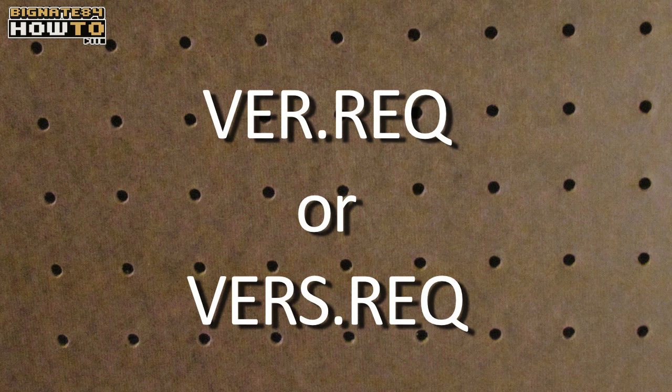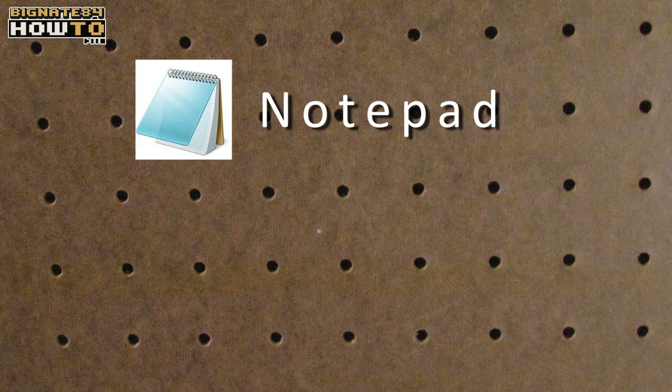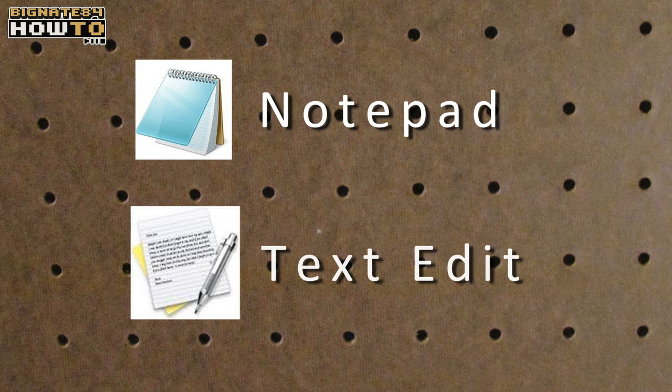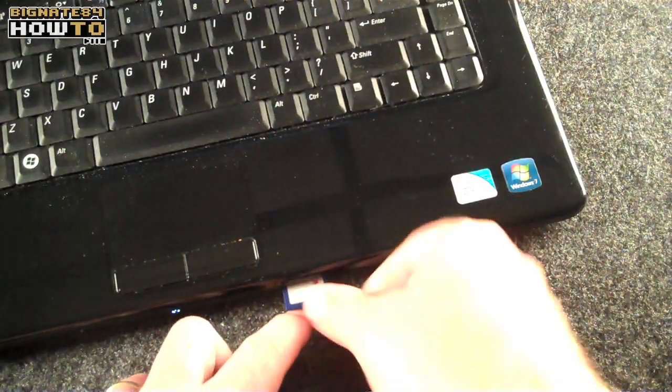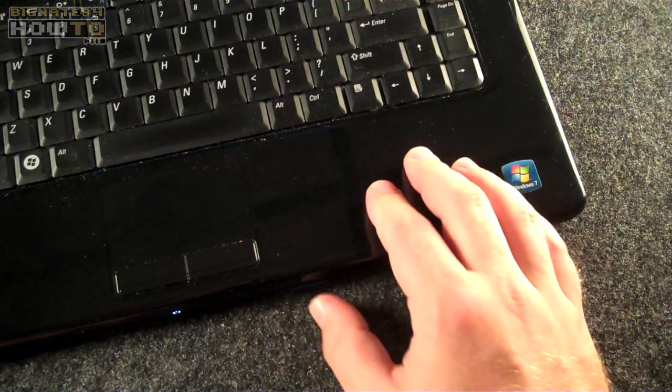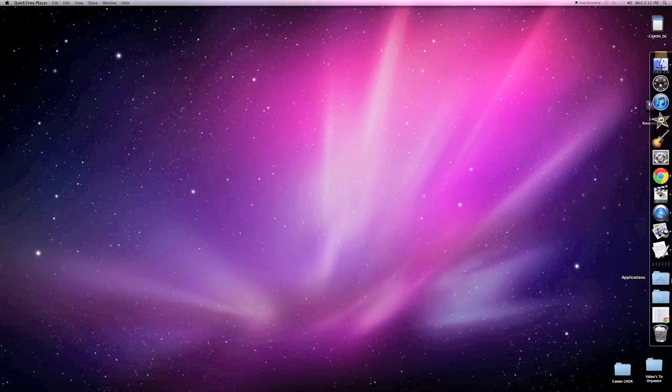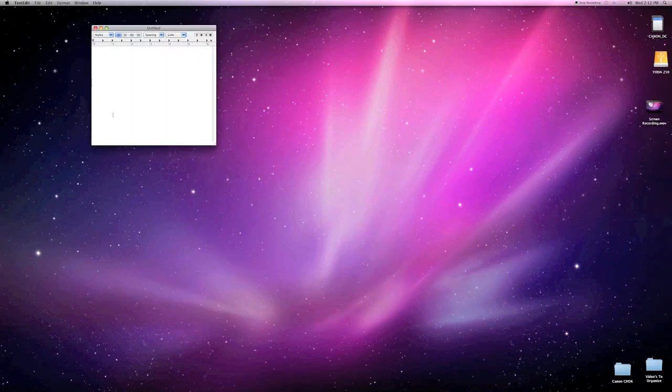Step two: Determine what firmware version is installed on your camera. Create a blank text file named ver.req or vers.req. You can do this on a PC using Notepad, or on a Mac using TextEdit — both of those programs should already be loaded on your computer. Take the memory card out of your camera and put it in your computer or card reader. If you have a Mac, find the program TextEdit and open it up, then go to Preferences.